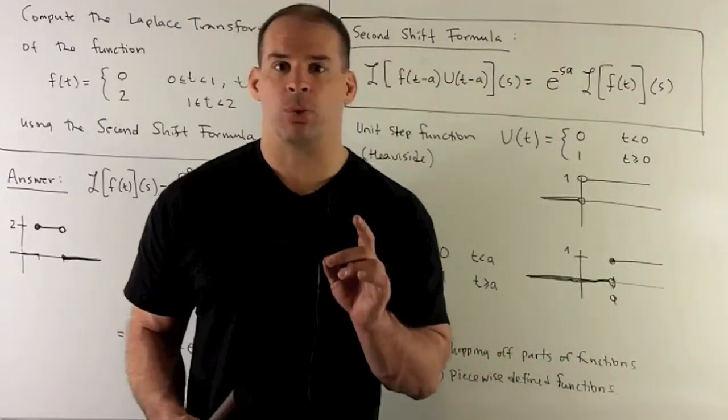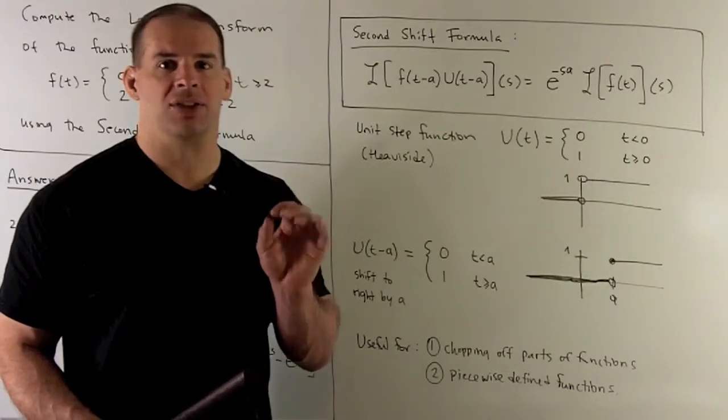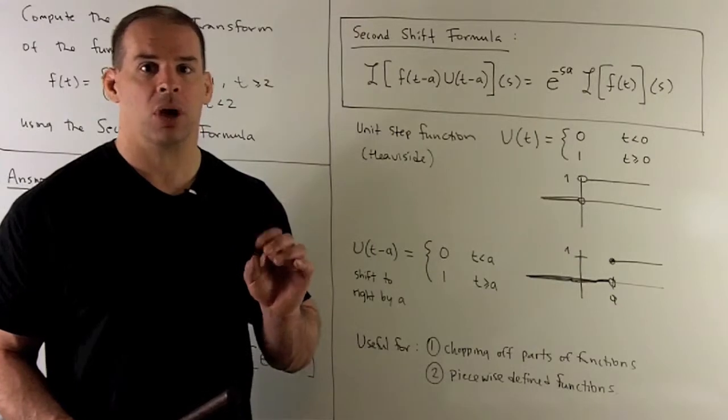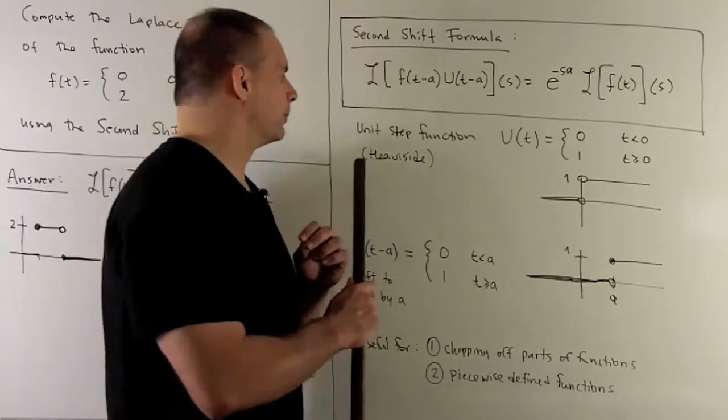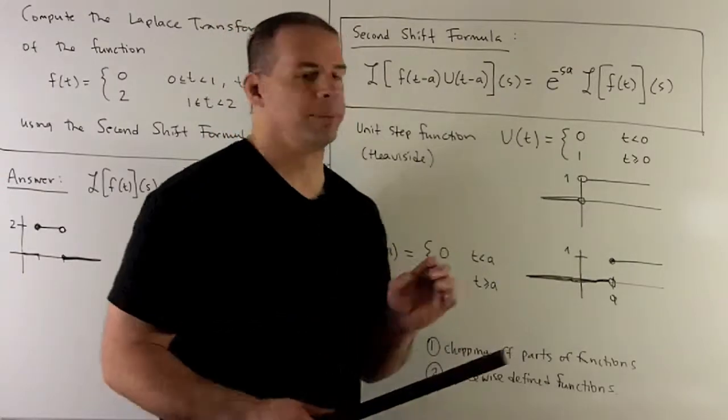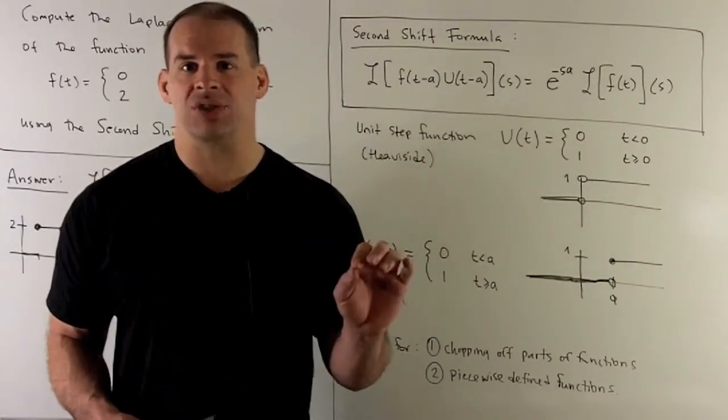Now, we have the second shift formula. So before we state that, let's take a look at some of the tools we're going to need. The main tool is going to be the unit step function, also called the heavyside function. So this is going to be defined as, so u of t equals, on negative t it's going to be 0. For non-negative t, it's going to be equal to 1.